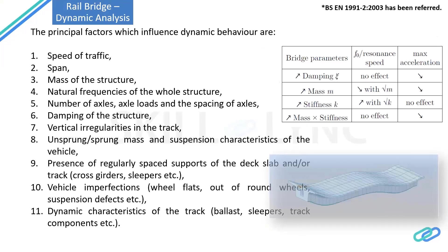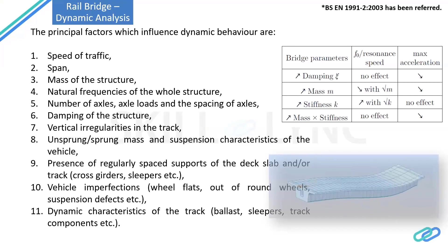The principal factors influencing dynamic behavior are: speed — as speed increases, the dynamic factor increases; span length; mass of the structure; natural frequency of the structure; axle configuration and axle load; wheel spacing; damping of the structure — RC structures have less damping than steel; and vehicle configuration and imperfections. All of these variables affect the dynamic factor and acceleration.